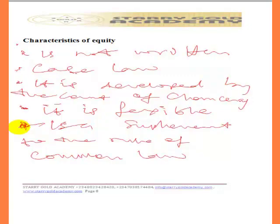Fourth, equity is flexible — it is not as rigid as common law. The Court of Chancery or Court of Equity wants to hear people and see the differences between issues before making a decision. Fifth, equity is a supplement to the rule of common law. It is there to support and assist common law, not to cancel it, but where common law has lapses, equity is there to amend those lapses and bring meaning into what common law is saying so that it will be acceptable.